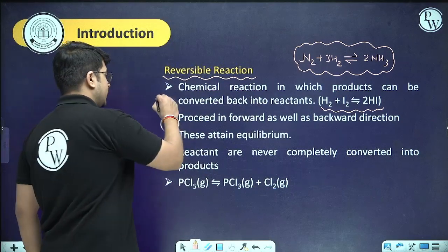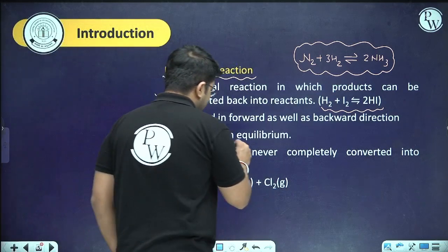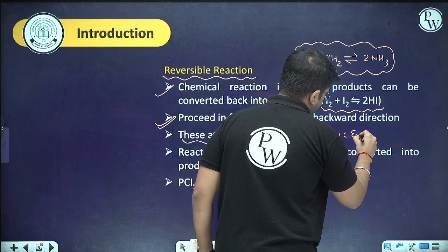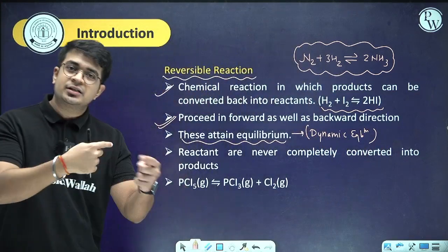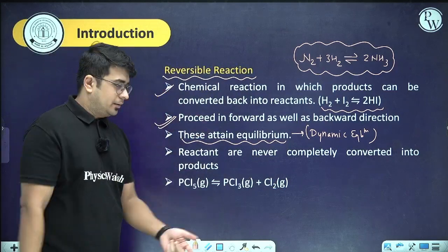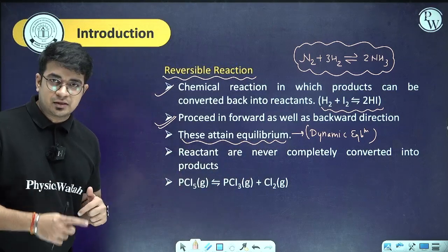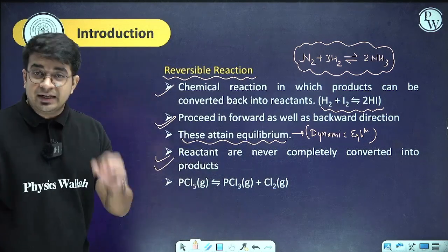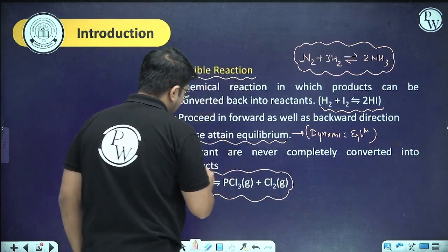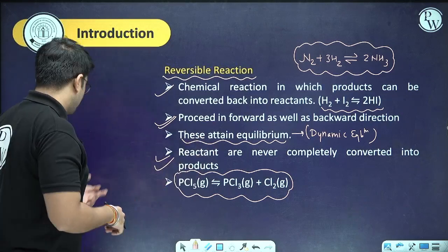Reversible reactions always proceed in forward as well as backward directions, attaining dynamic equilibrium where the reaction never stops. Reactants are never completely converted into products and vice versa — the reaction never goes to completion. For example, PCl₅ ⇌ PCl₃ + Cl₂ is also a reversible reaction that doesn't complete.